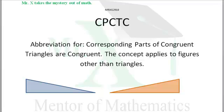So, if we've already established that these two triangles are congruent, then we know that the corresponding parts are congruent.